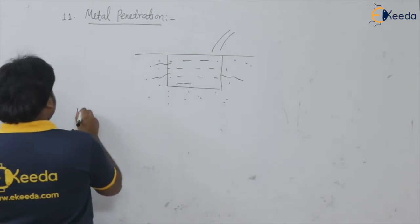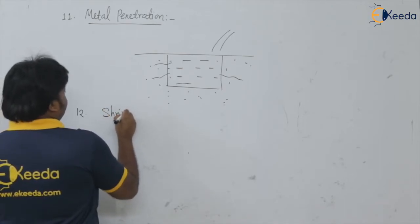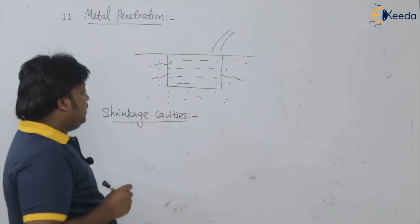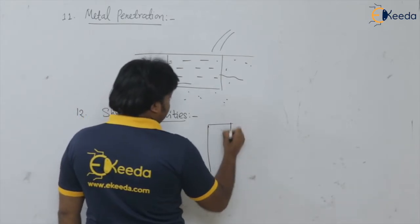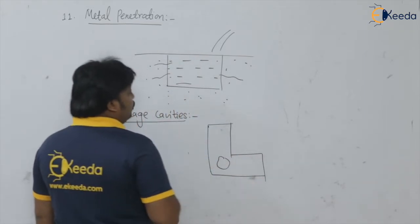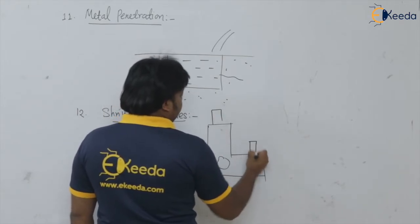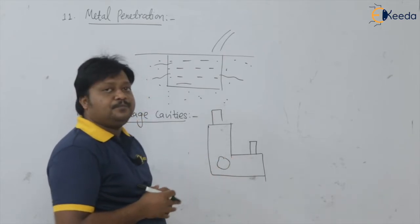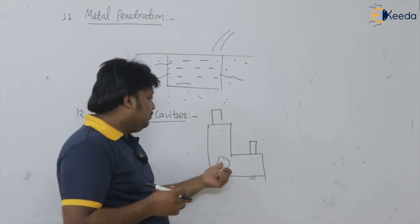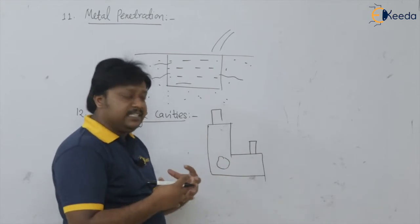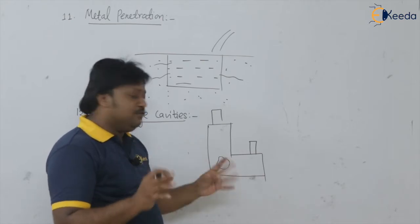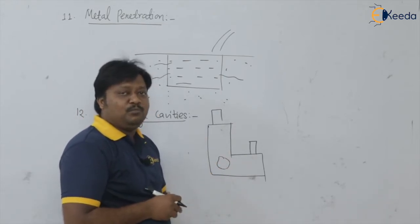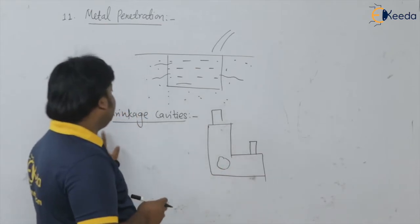Then we are having the shrinkage cavities. These are the cavities which are produced, for example, during an L-shaped casting. Proper riser feeding is necessary. If there is improper riser placement and feeding, some shrinkage cavities take place where the shrinkage cannot get compensated properly by the riser. That's why there are cavities left in the casting known as the shrinkage cavity. We have to place the riser properly to feed the shrinkages.